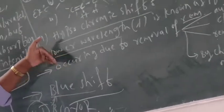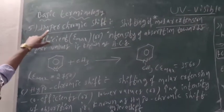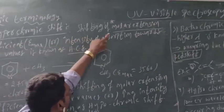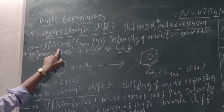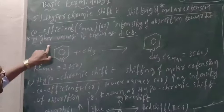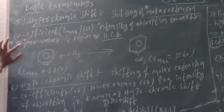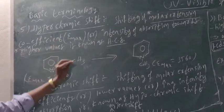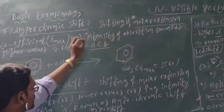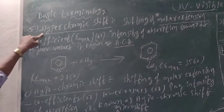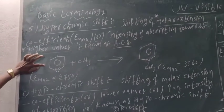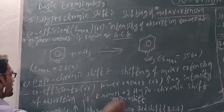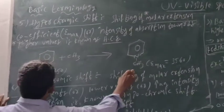Next: hyperchromic shift. The name itself tells us — hyper means increasing. Hyperchromic shift is the shifting of molar extinction coefficient (epsilon max) towards higher values, meaning the intensity of absorption increases towards higher values. This is known as hyperchromic shift. Molar extinction coefficient is also known as molar absorption coefficient.